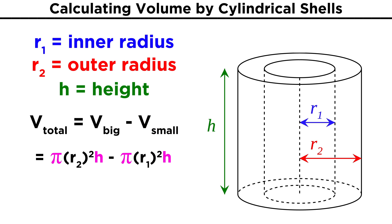Factoring out pi and h, we can turn this into pi times the quantity R2 squared minus R1 squared times h. If we remember how to expand a difference of squared terms from algebra, this term is equal to the quantity R2 plus R1 times the quantity R2 minus R1.